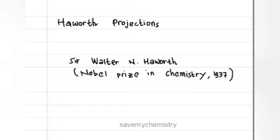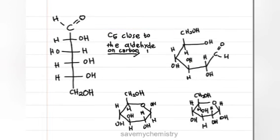Haworth projections, a common way of representing the cyclic structure of monosaccharides is the Haworth projection, named after the English chemist Sir Walter and Haworth, Nobel Prize in Chemistry in 1937. See the structure, how to convert Fischer projection to Haworth projection. You have to take note that if you want to redraw, you have to show the OH on carbon number 5 close to aldehyde on carbon number 1.